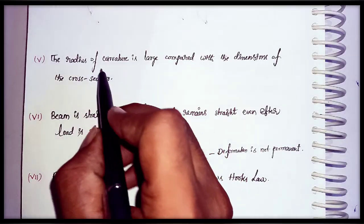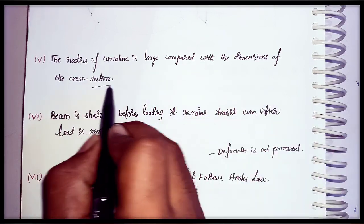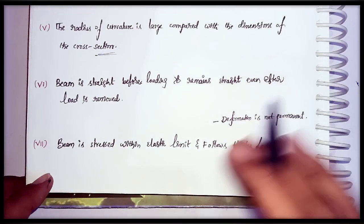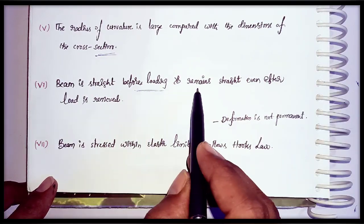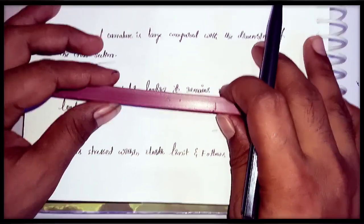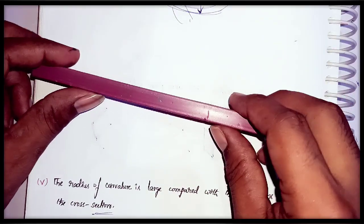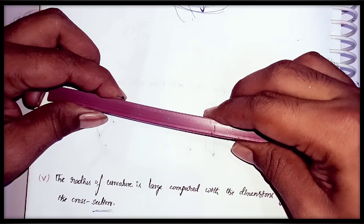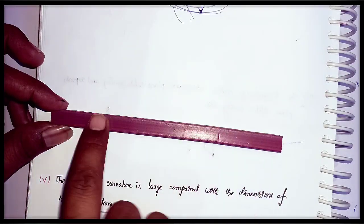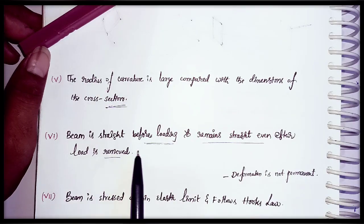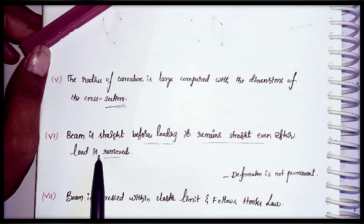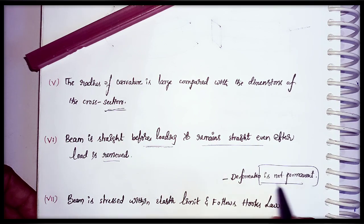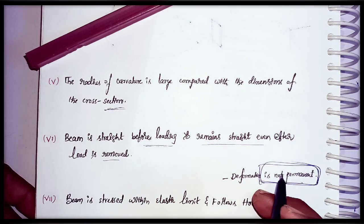The next assumption is that the radius of curvature is large compared with the dimensions of the cross-section. The next important assumption is that the beam is straight before loading and remains straight after the load is removed. When a load is applied the beam deflects, but due to its elastic nature, after removing the load, the beam returns to its straight position. The deformation is not permanent — it is temporary in nature.